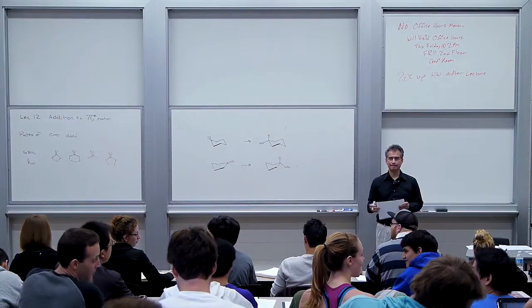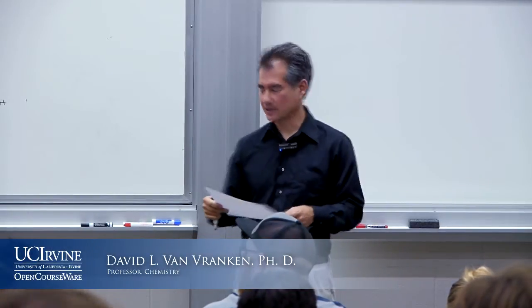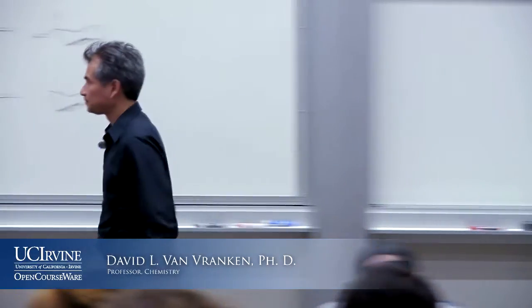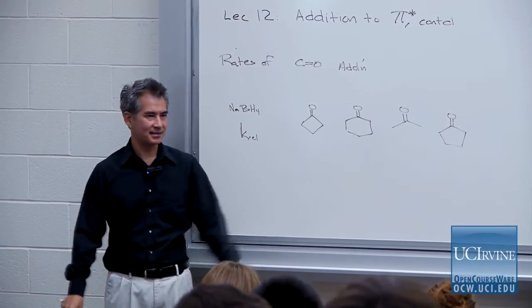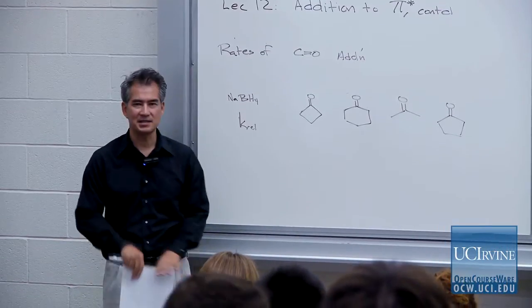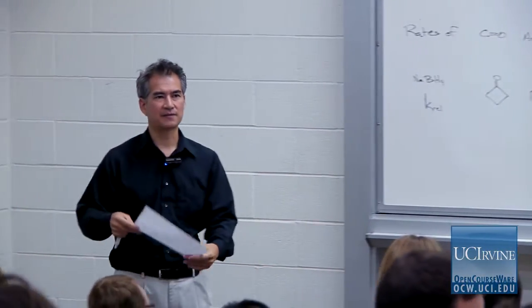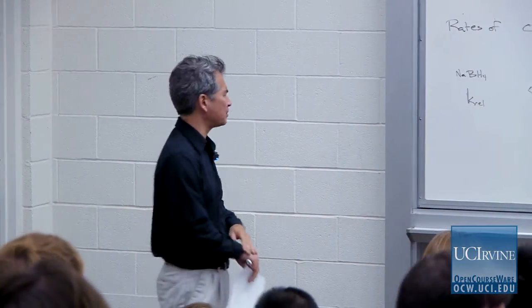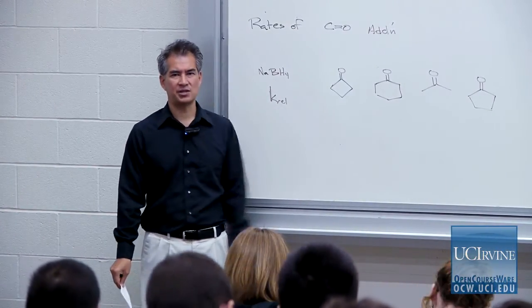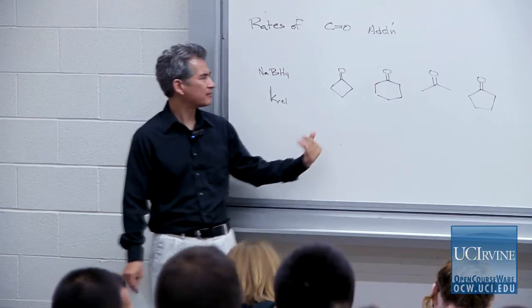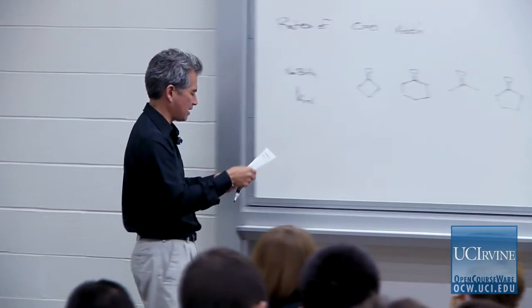We're going to try to finish up additions to carbonyls today. When I think of π*, I always think of carbonyls — that's the classical functional group for C-C bond formation. When we left off, we were talking about the equilibrium constants for reversible addition of water to various aldehydes and ketones. Now I want to talk about kinetic rates of addition — not the equilibrium for pyramidalization, but the rates of addition to these various ketone compounds.